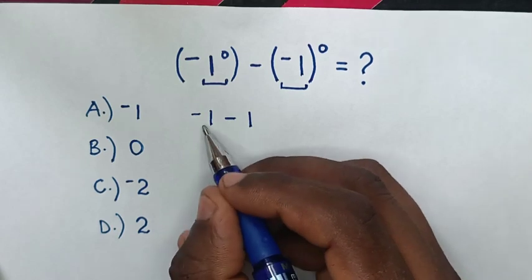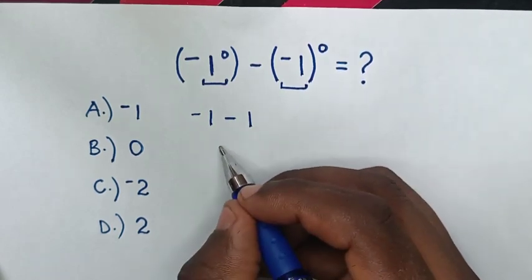Then, in the next step, negative 1 minus negative 1 is negative 2.